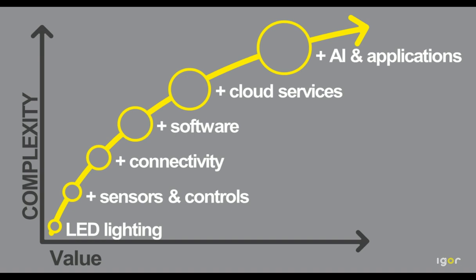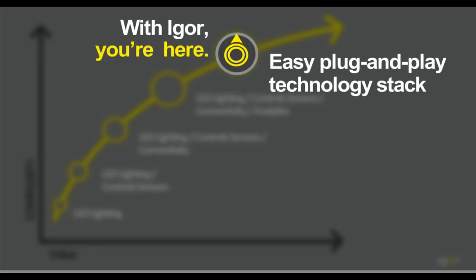Looking at how the industry has progressed, the evolution started with LED lighting, then we layered on sensors, controls, and connectivity. We're starting to see some implement software, and even fewer have reached cloud services yet. Ultimately, with all of these things in place — with the mandate of being simple plug-and-play — AI can be applied, and other applications can easily be spun up, kind of like on an iPhone where you just deploy an application. It will just work with your building, and applications can be shared between people.